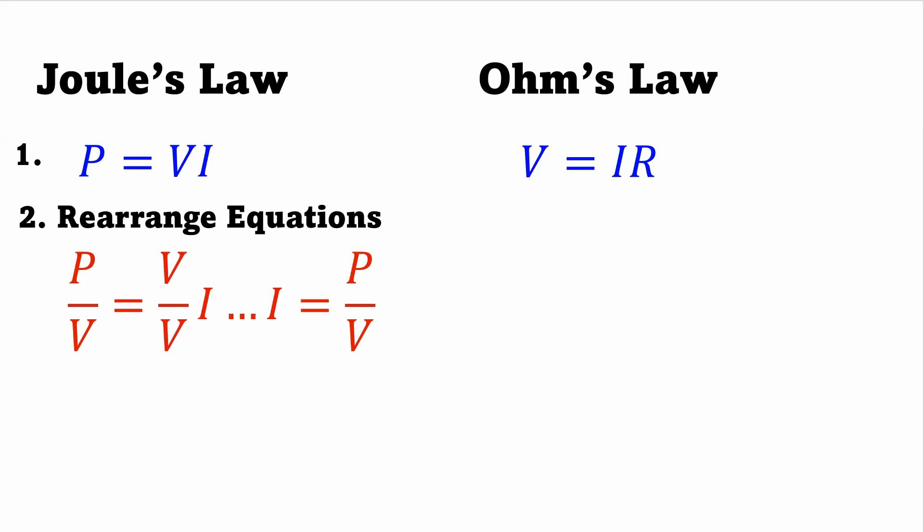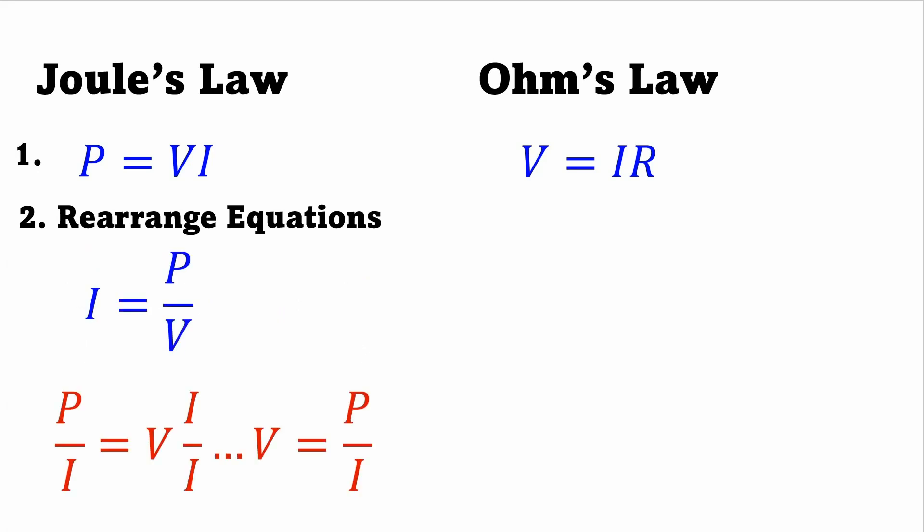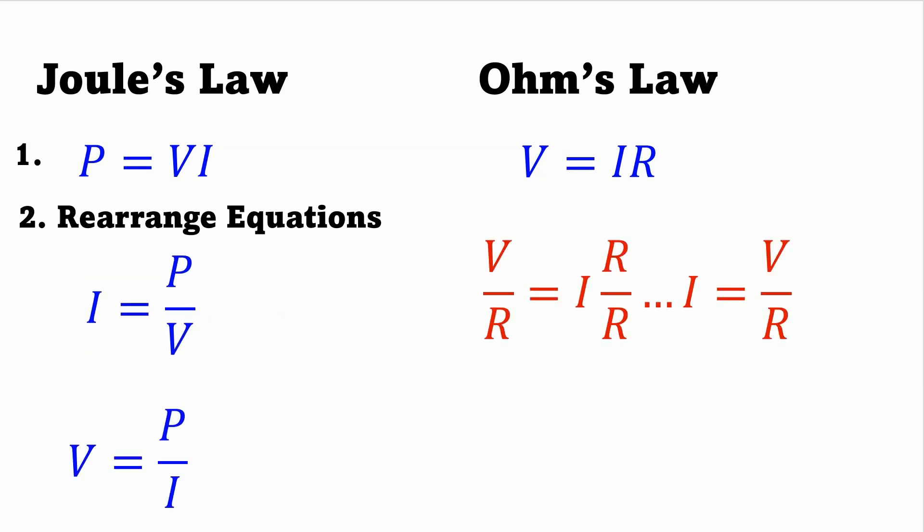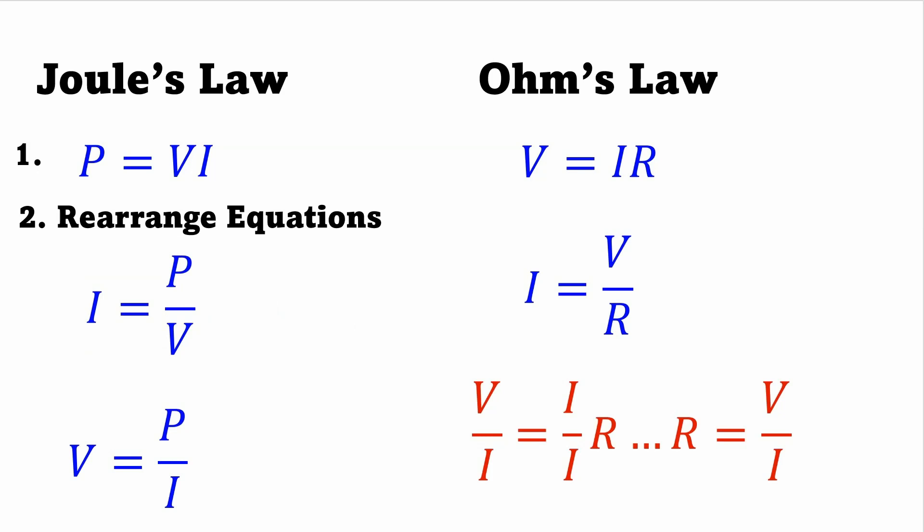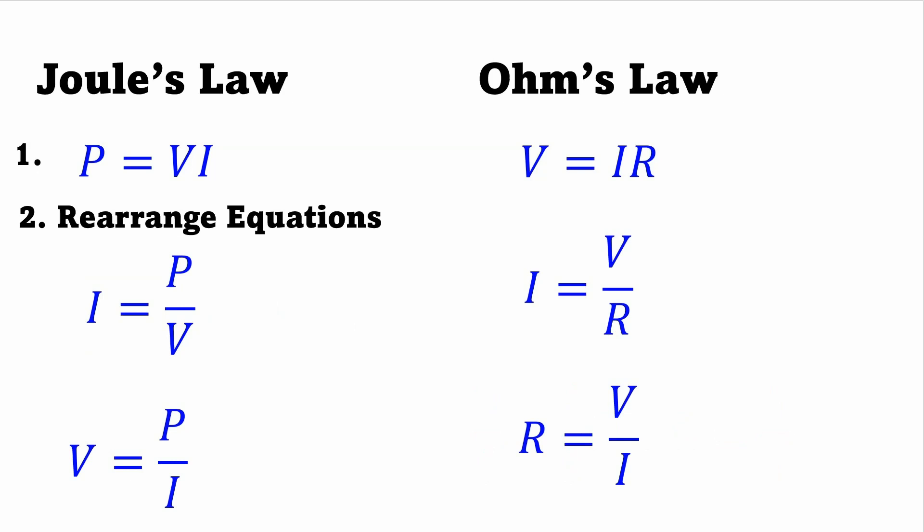You only need to memorize one form of Joule's Law and one form of Ohm's Law, and you can derive all the others. First, you can just rearrange the equations. For Joule's Law, if I divide both sides by voltage, I get current equals power over voltage. Also, if I divide both sides of Joule's Law by current, I get voltage equals power over current. Similarly, rearranging Ohm's Law: dividing both sides by resistance gives current equals voltage divided by resistance, and dividing both sides by current gives resistance equals voltage over current. With just minimal rearranging, I can get six of the 12 forms.